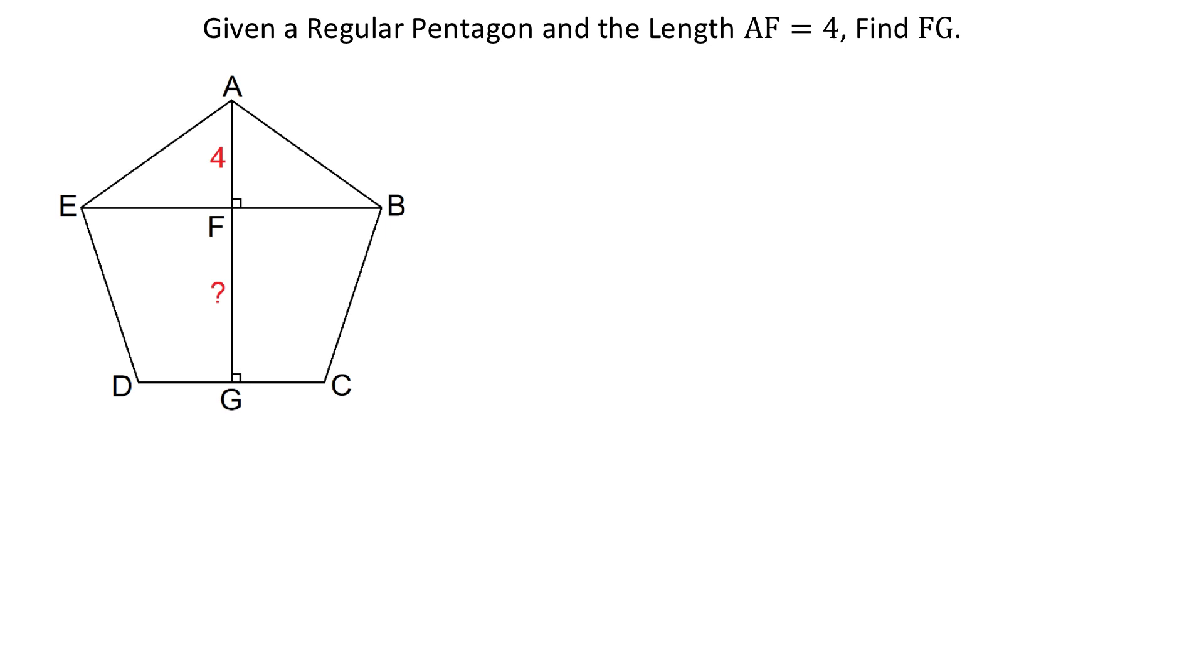Now, because this is a regular pentagon, all the sides and all the interior angles are equal. So we will start by finding an interior angle. The formula for an interior angle in a regular polygon is N minus 2 times 180 degrees divided by N, where N represents the number of sides. In a pentagon, we have 5 sides.